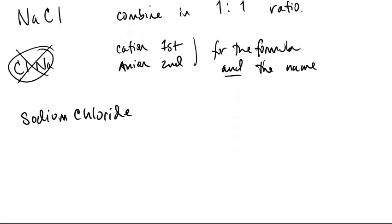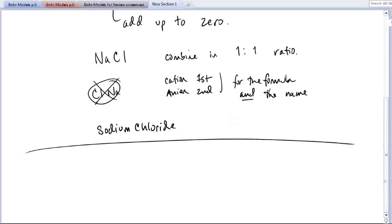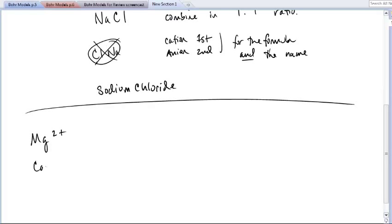Let's do one more example. Let's say, for example, I have an ion of magnesium. Magnesium forms a two-plus cation, and fluorine forms a minus-one anion.